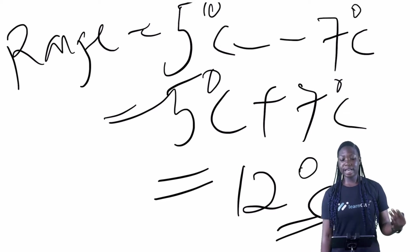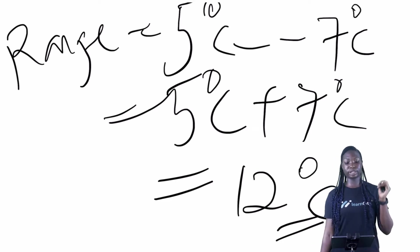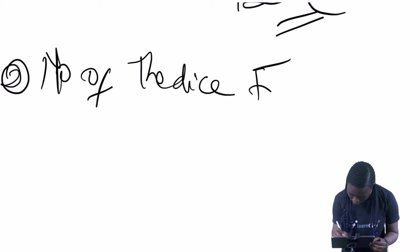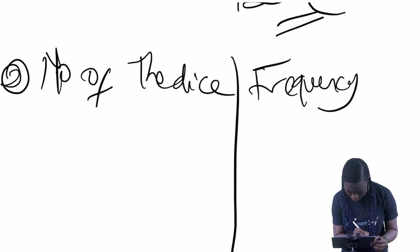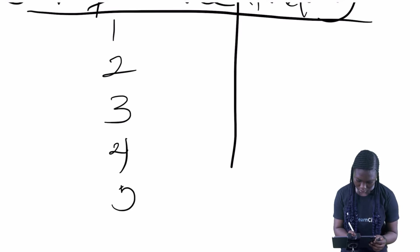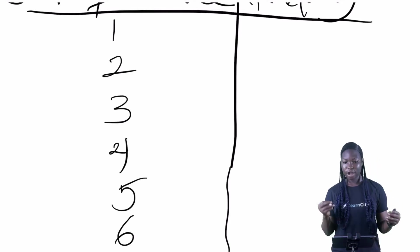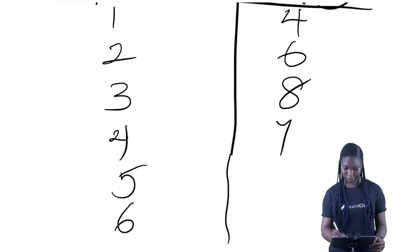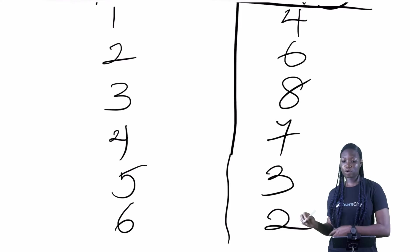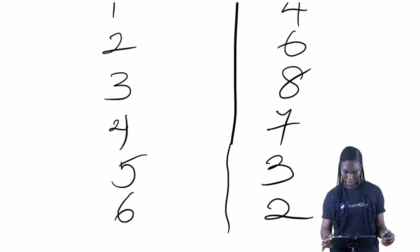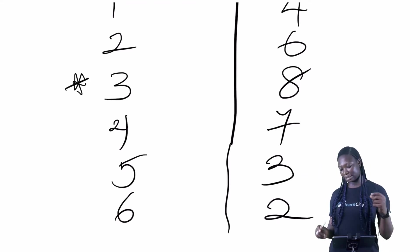Now the second example says: a dice was thrown many times. The table is given below showing the number of dice faces that appeared. We have the number of dice: 1, 3, 4, 5, 6 — and the frequency: 4, 6, 8, and so on. We have to find the mode, median, and range. The mode here will be 3, because it appears the most.